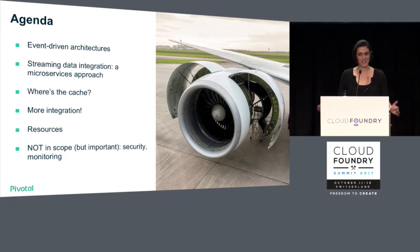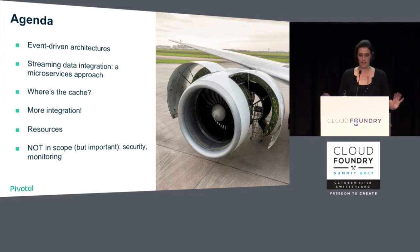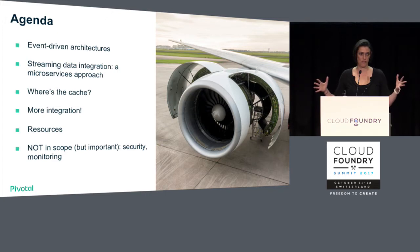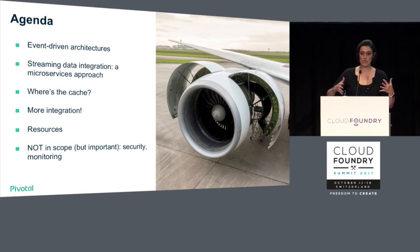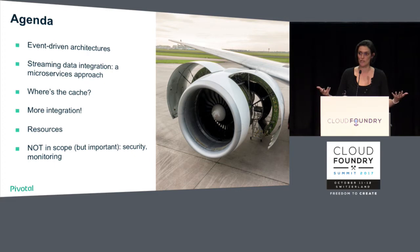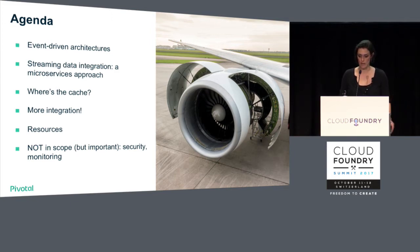Then there's 'where's the cache?' — a little bit of a play on words, like 'where's the catch?' Talk a little bit about more integration because there are other types of integration that are super relevant here. And then I've got a few resources. Some things that are not in scope for this talk: things like security and monitoring. For example, GE apparently is using the UAA capability in Cloud Foundry for their device authentication — super interesting, but I couldn't fit it into this one.